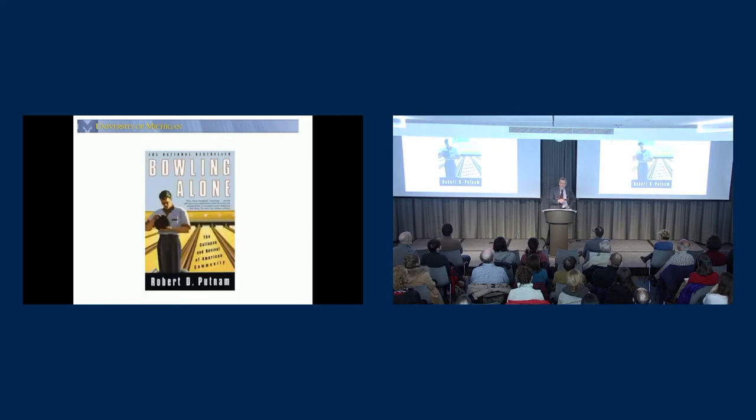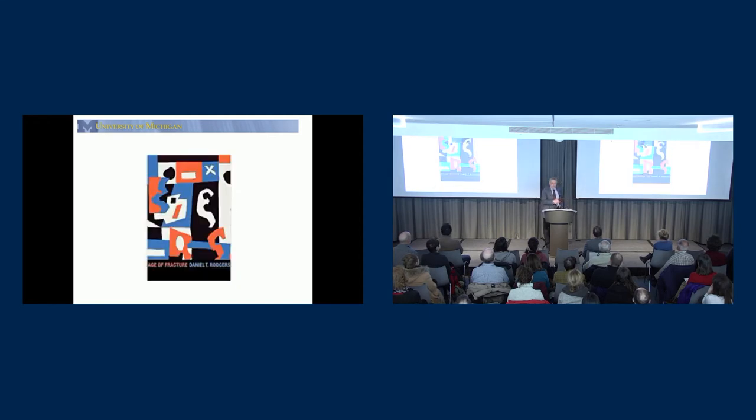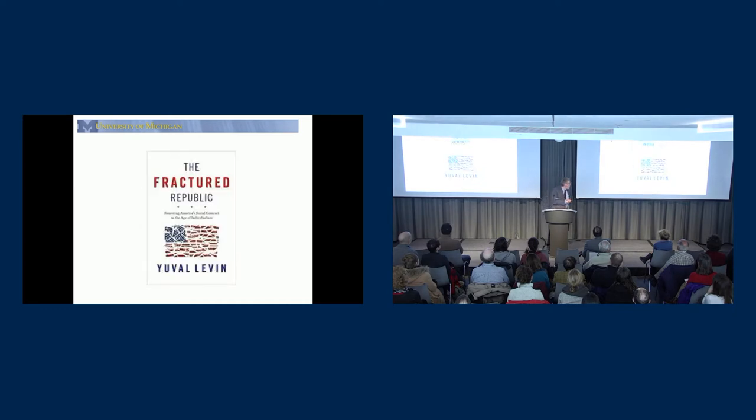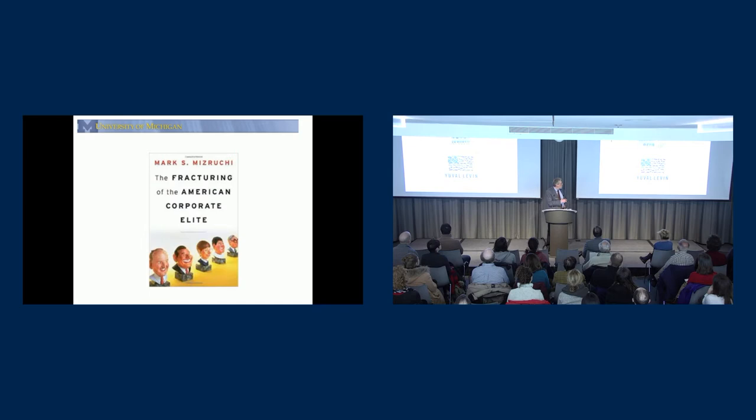But today we're facing a different kind of crisis. Just consider these publications. Bob Putnam's Bowling Alone, The Collapse of American Community. Then we have Daniel Rogers' Age of Fracture. We have Yuval Levin, The Fractured Republic. We have Mizraki, The Fracturing of the American Corporate Elite. By the way, the publisher gave me that title. That was not my original one. As you can see, there's some kind of a pattern here, maybe.